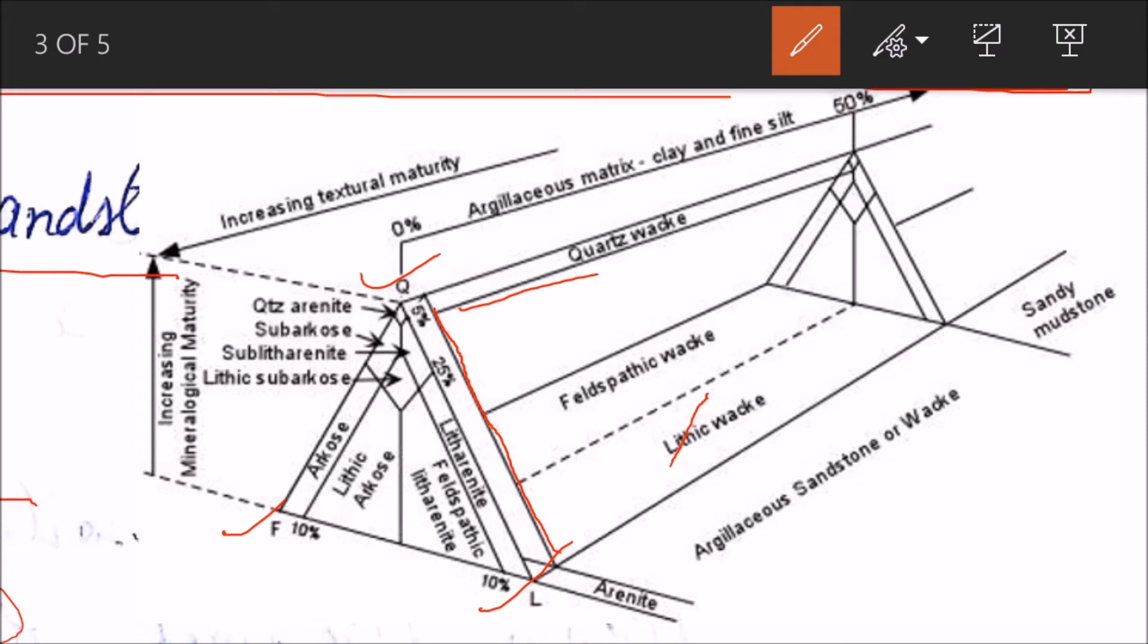And the increase in the clay matrix, as you go from left end to the right end, the matrix clay matrix rich - clay and fine silt increases. So this is 10 percent line. Then there is this 10 percent line here, this is for differentiating between litharenite and feldspathic litharenite.